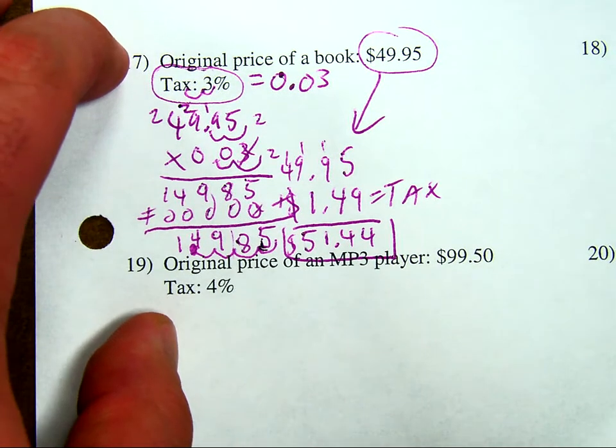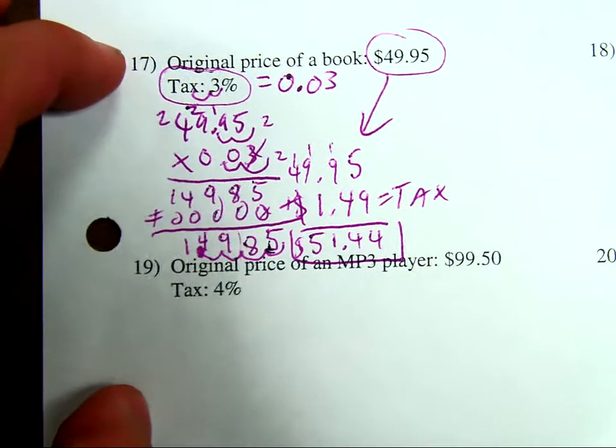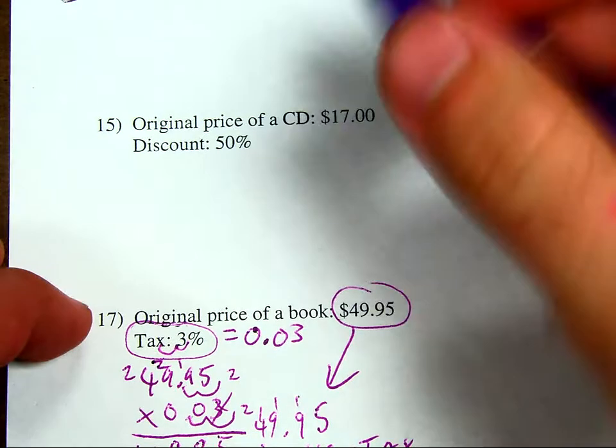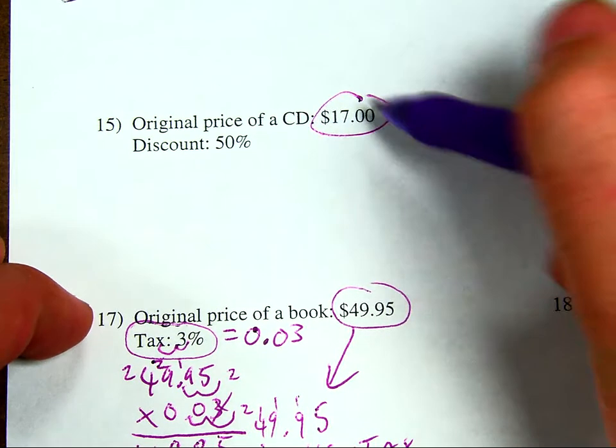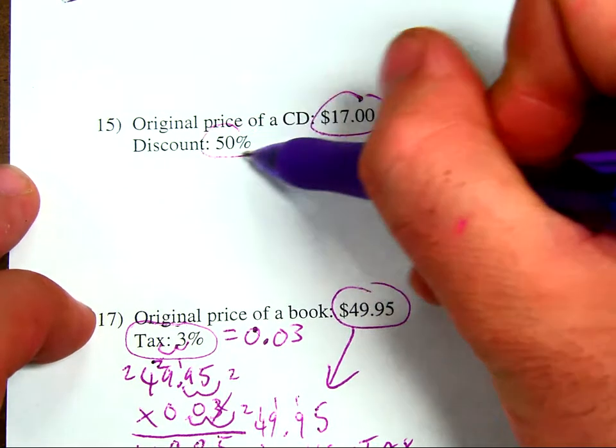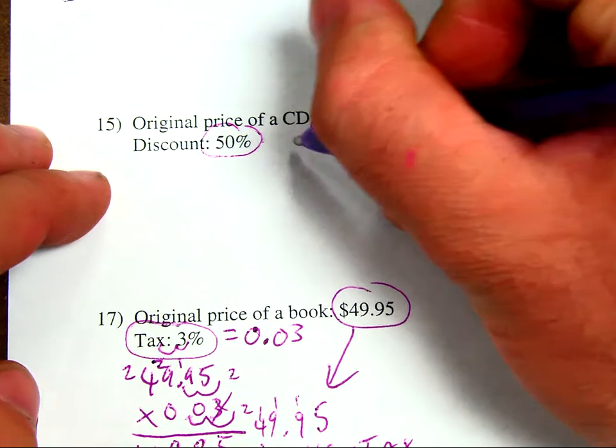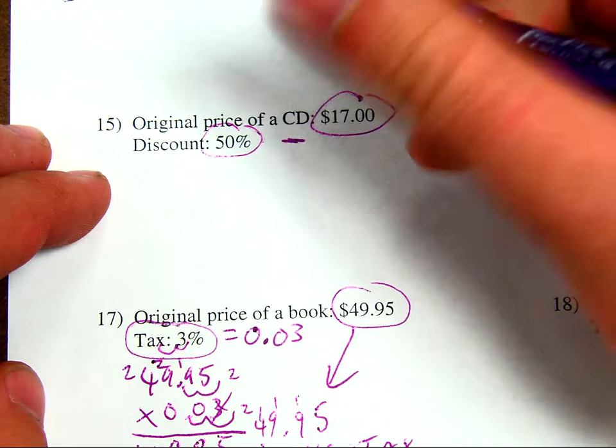Now, what about if I did a discount? For my discount, it says my original price of a CD is $17. My discount is 50%. So, I'm taking 50% off. That's a great deal. But, I've got to figure out how much I'm actually buying it for. So, for my discount, it's going to be a minus problem. I have to find out what 50% of 17 is.